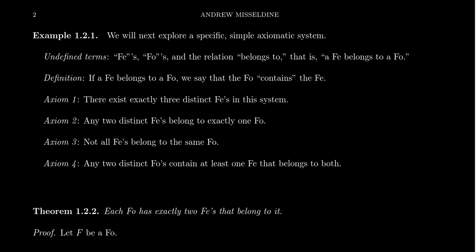With the axiomatic method, we have some undefined terms — things that can be interpreted but in themselves have no meaning. These terms we're going to call 'fee' and 'foe.' What's a fee? What's a foe? It might make you think of giants and beanstalks, but these words are intentionally chosen so that there are no context clues behind them. They could be anything, really.